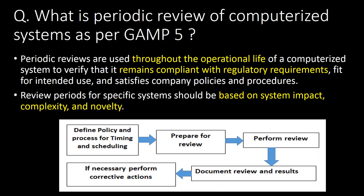What is periodic review of computerized systems as per GAMP-5? Periodic reviews are used throughout the operational life of computerized systems to verify that the system remains compliant with regulatory requirements, fit for intended use, and satisfies company policy and procedures. Review periods for specific systems should be based on system impact, complexity, and novelty. The periodic review procedure includes defining policy and process for timing and scheduling, preparing for review, performing the review, documenting the review and results, and taking necessary corrective actions if required.